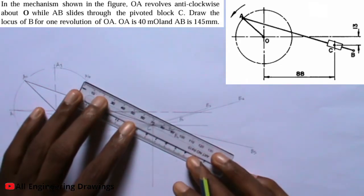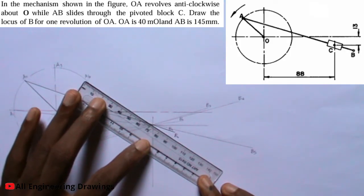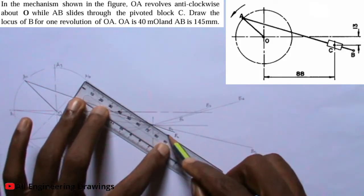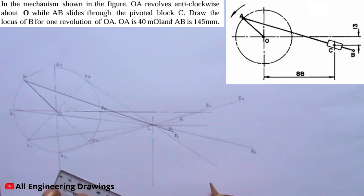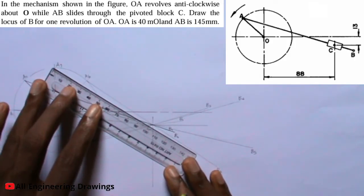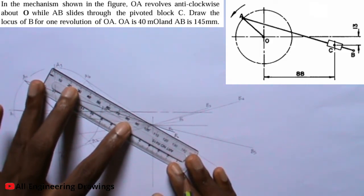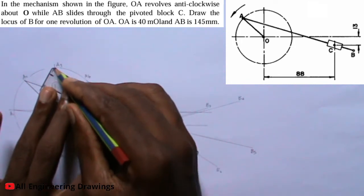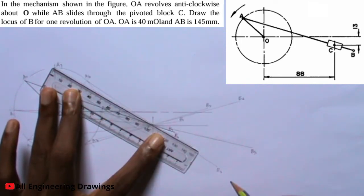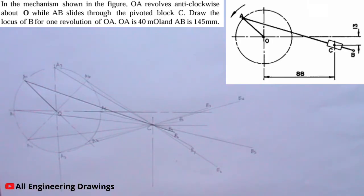Now for point A6. I will label the end of the line B6. Now for point A7, which is the last point. I will label the end of the line B7.